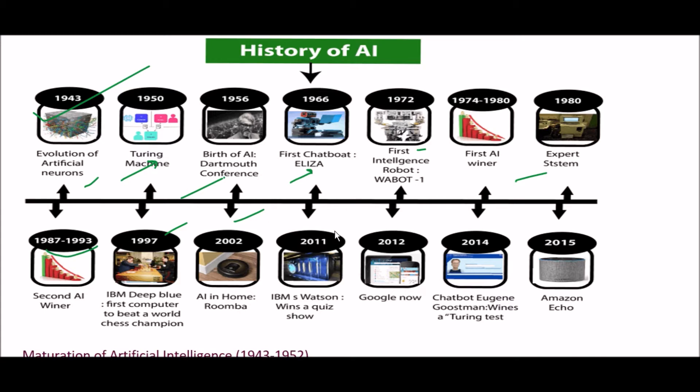In 2002, AI entered the home as Roomba. Then 2011, 2012, Google Now became available. And in 2014, 2015, and the present day, AI has continued to advance.